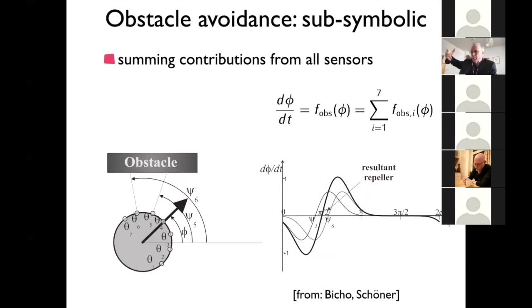The idea of the sub-symbolic approach is that you superpose the contributions of all the different sensors. With seven sensors you add up contributions and get repelled from there — actually only six terms matter; think about whether sensor four ever contributes. Here's an example where two sensors are activated and somewhat parallel, so they create an average repeller in between — you're not restricted to only avoiding directions sampled by those sensors. You can do averaging between two neighboring sensors if both sense something close, and you are effectively repelled from something in the middle.